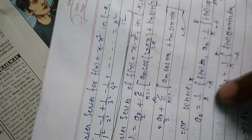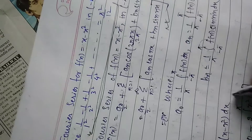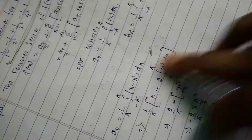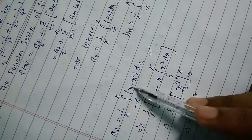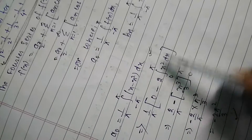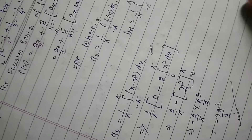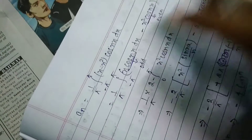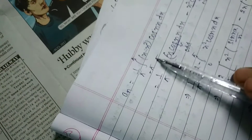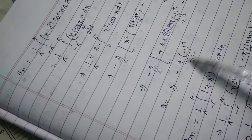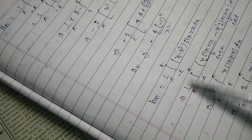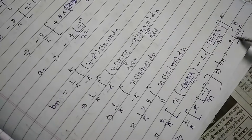For a₀: a₀ = (1/π) · integral from -π to π of (x - x²) dx. Since x is an odd function its integral over [-π, π] is zero, and x² is even so we take twice the integral from 0 to π. Integrating x²: [x³/3] from 0 to π gives -2π²/3. For aₙ = (1/π) · integral of (x - x²)·cos(nx) dx, using the integration formula the result is -4(-1)ⁿ/n². For bₙ = (1/π) · integral of (x - x²)·sin(nx) dx, after integration we get the corresponding result.